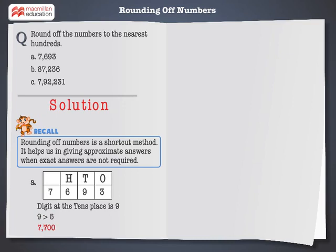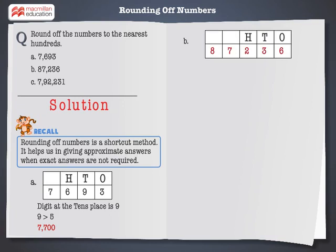Now, let us round off the next number. In 87,236, the digit at the tens place is 3. And we know 3 is less than 5. So, it will be rounded off to the nearest lower hundreds, that is, 87,200.